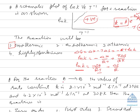For a reaction A → B, if the rate constant k is given at 298 K and 308 K and the question asks for the order of reaction, look at the units. If the units are mol⁻¹ L s⁻¹, that corresponds to a second-order reaction. There is no need to solve the question fully — simply by seeing the units of the rate constant, you can predict the order of reaction.